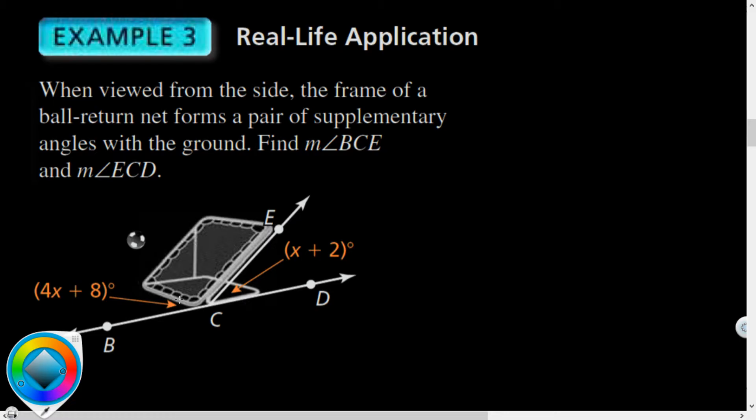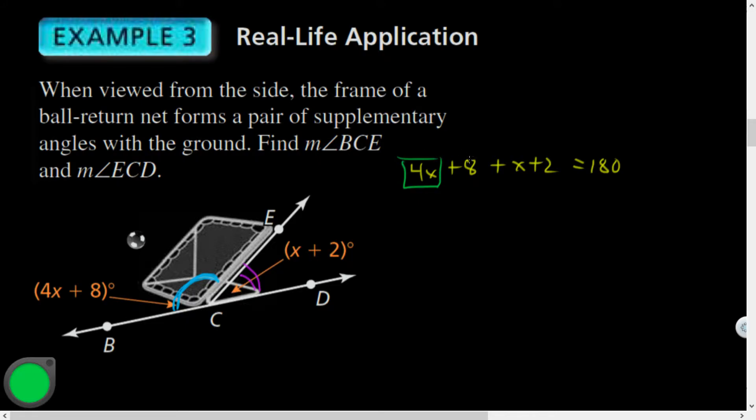So here we go. Notice I've got two angles here. I've got this big angle, this obtuse angle, and I've got this acute angle right here. Those ones are supplementary. So I could write an equation: 4x plus 8 plus x plus 2 equals 180. Why is that true?